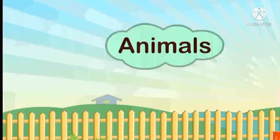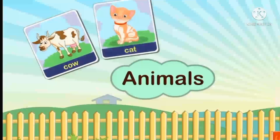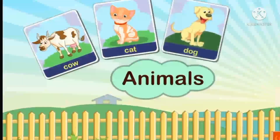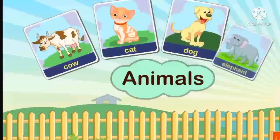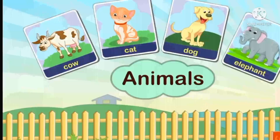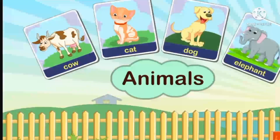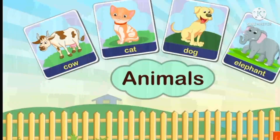Now students, let's look at some names of animals: cow, cat, dog, elephant. Students, these are the names of animals, and these are nouns. So students, names of animals are nouns.